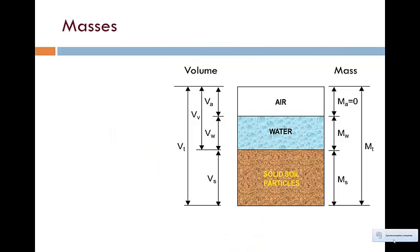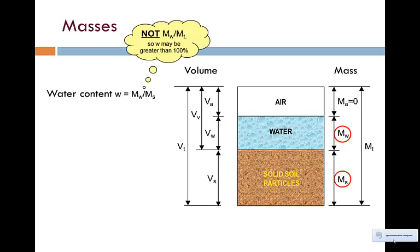We have one important mass definition, and that's water content, defined as the mass of water divided by the mass of solids, MW divided by MS. A common mistake is to calculate water content as MW divided by the total mass MT, and this is incorrect. As a result of the correct definition, it is possible for the water content to exceed 100%.